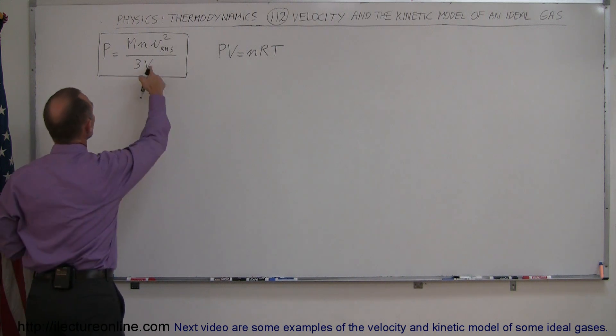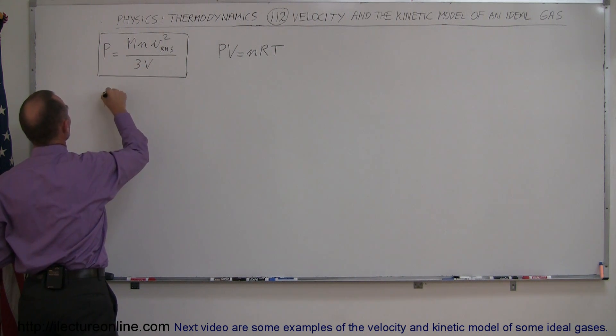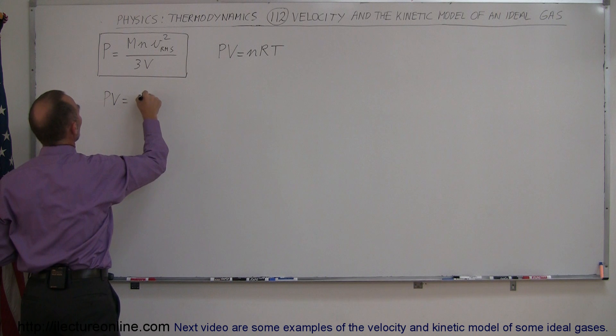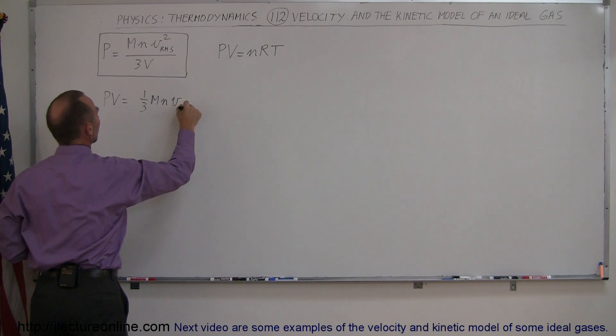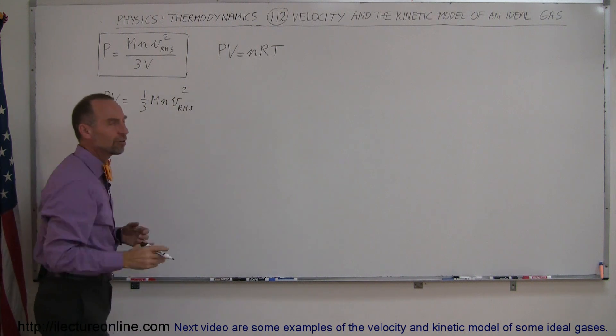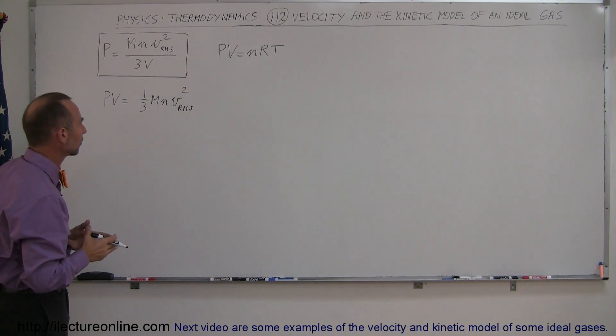So we're going to move the V over here. That means that PV is going to be equal to one third MN times the velocity RMS squared. Again, RMS stands for root mean square which is the effective velocity of the molecules in the gas.